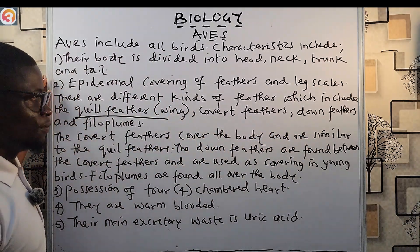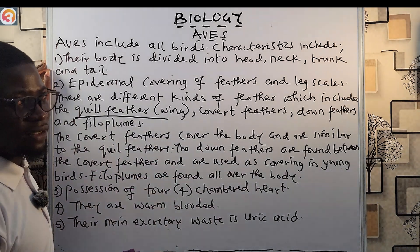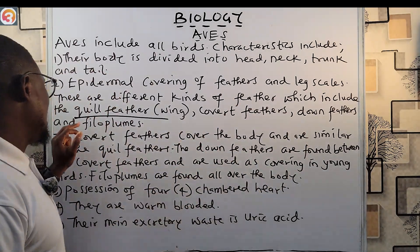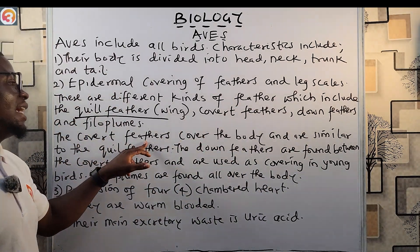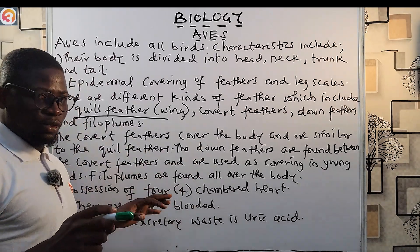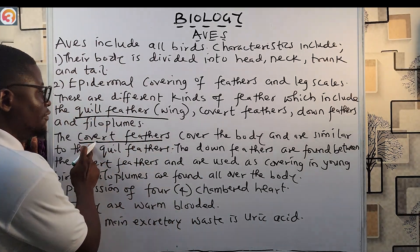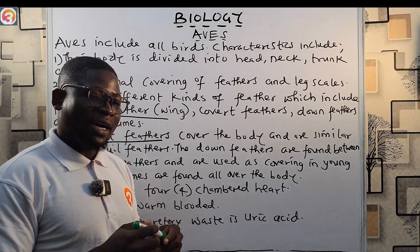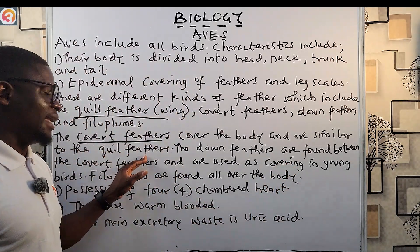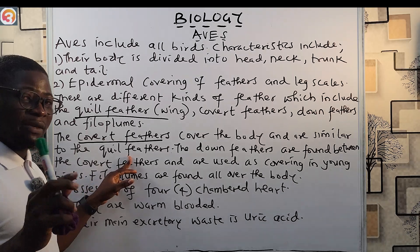We also have covert feathers, down feathers, and filoplumes. The covert feather is the one that covers the body of the bird. Covert — cover — the bird. Covert feathers cover the body of the bird and are similar to the quill feathers, but they are not used for flight; quill feathers are specifically meant for flight.